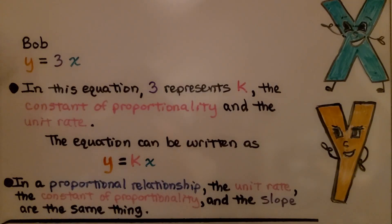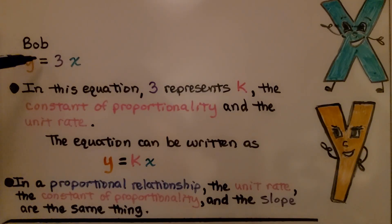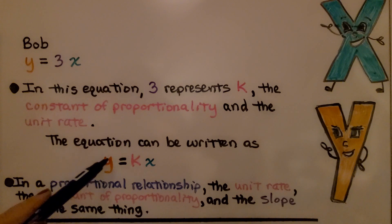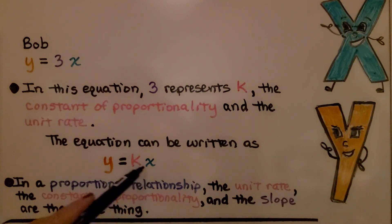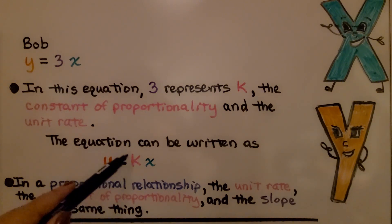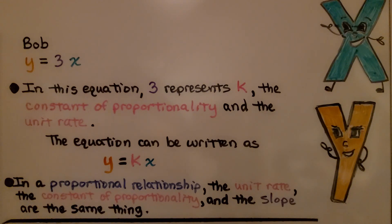Bob is y equals 3x as our equation. In this equation, 3 represents k, the constant of proportionality and the unit rate. The equation can be written as y equals kx, because that's the slope. In a proportional relationship, the unit rate, the constant of proportionality, and the slope are the same thing.